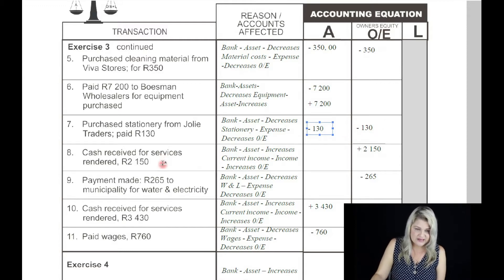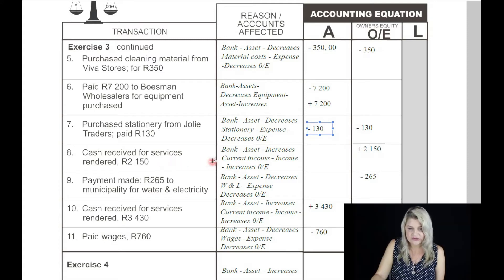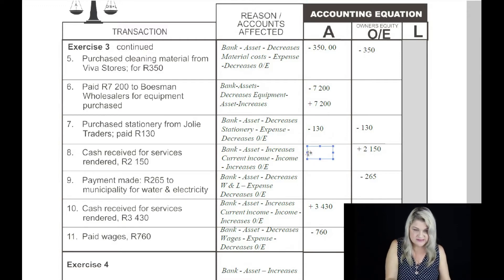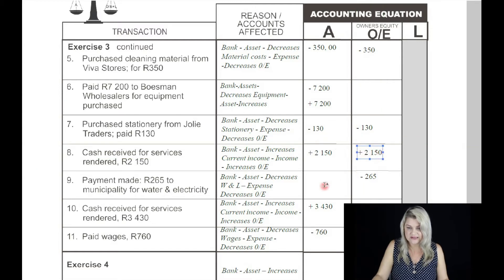Number eight: cash received for services rendered. Services rendered is an income for the business and we call that current income. The two accounts will be bank — where will the income go? Into the bank account. So the bank account is an asset and that asset increases by 2,150 Rand, and an income always increases owner's equity.